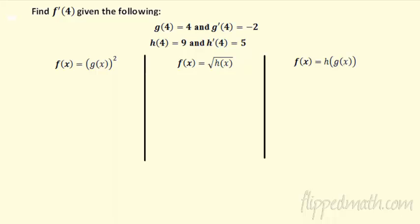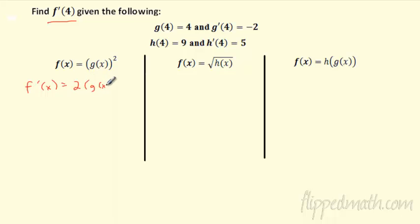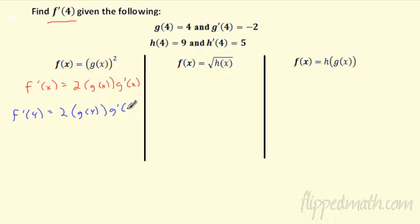All right, the last problem here. We're going to work with the notation a little bit. My ultimate goal is to find the derivative of f at 4. If f(x) = [g(x)]², this is chain rule — I've got g(x) inside the squaring function. To find f'(x): bring down the 2, freeze the inside, drop the power to 1, then multiply by g'(x). Now evaluate at 4: it'll be 2·g(4)·g'(4).